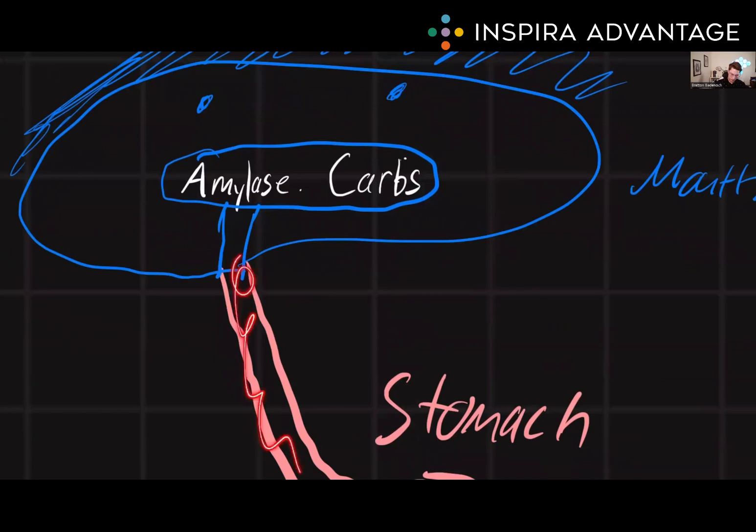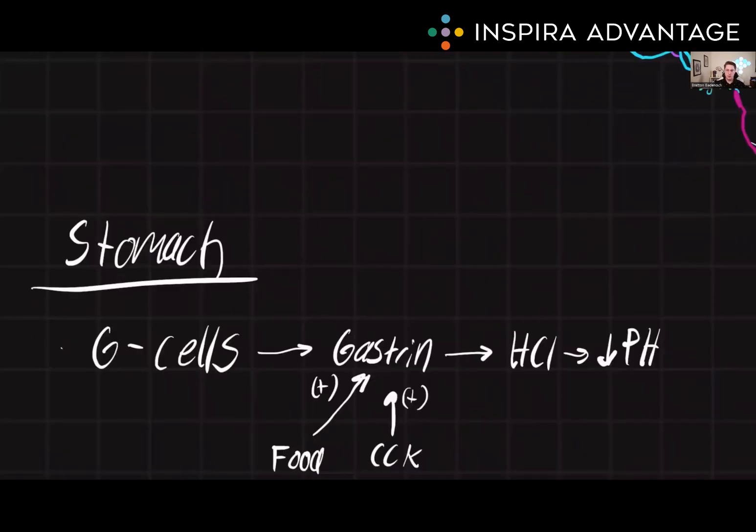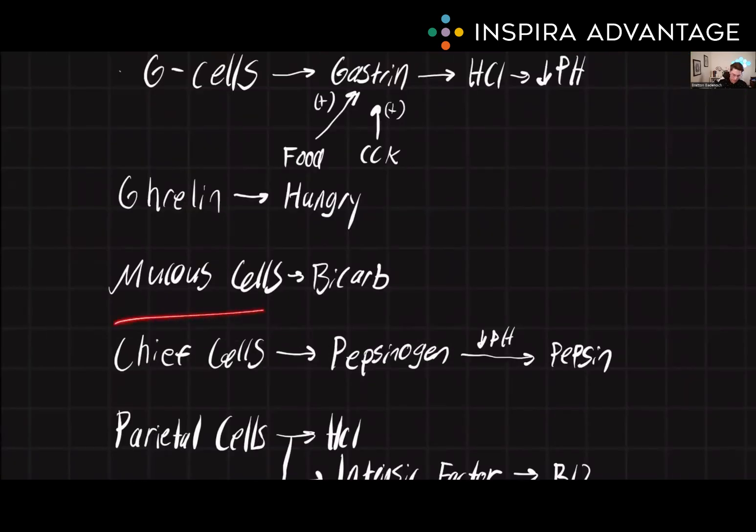As the food is chewed and mixed with saliva, it forms a bolus that is transported down into the stomach. The stomach is lined with several types of cells that play different roles in the digestive process. These include mucus cells, chief cells, parietal cells, and G cells.